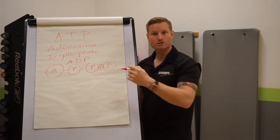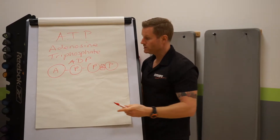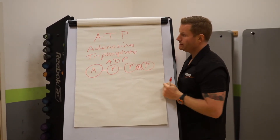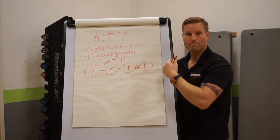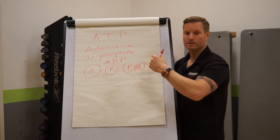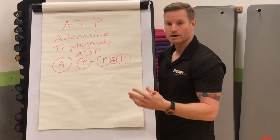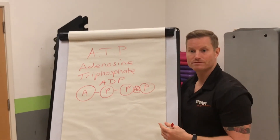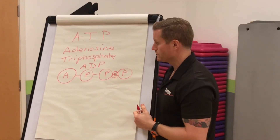So we have this continuous cycle called the ATP cycle, where we go ATP into ADP back into ATP. And this can happen three different ways. We have three different energy systems that can do this for us.